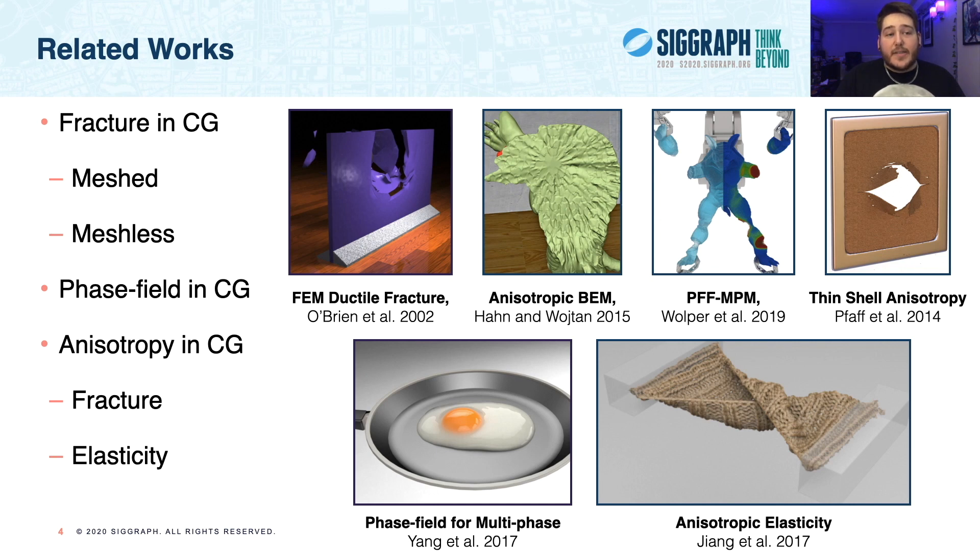Material anisotropy has seen success in recent works, such as the BEM-based spatially varying toughness approach of Han and Woden, or the thin-shell anisotropic fracture of Pfaff et al., and anisotropic elasticity has seen similar successes, such as last year's work by Kim et al., as well as the thin-shell anisotropy used by Zhang et al. for MPM cloth simulation. In building anisompm, we're inspired by the QR decomposition-based elasticity approach for MPM cloth, as well as the continuum damage mechanics focus of PFFMPM.